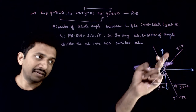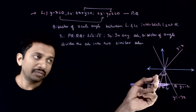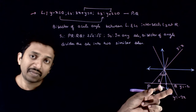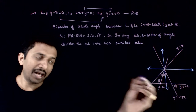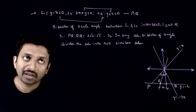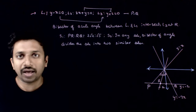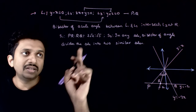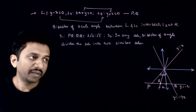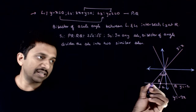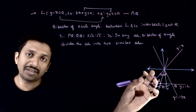The acute angle bisector between L1 and L2 intersects the line L3 at point R. The first statement is that PR : RQ = 2√2 : √5.